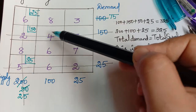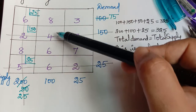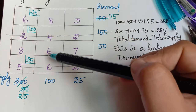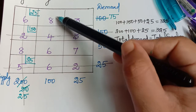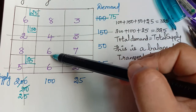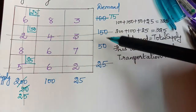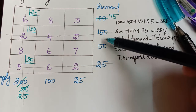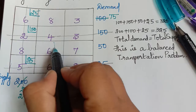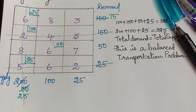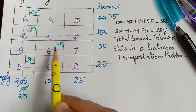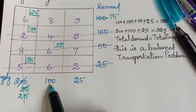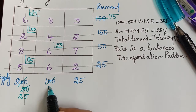In the second column, two cells have already been struck off, leaving two cells with values 8 and 6. We choose the least value, which is 6, and make an allocation for this cell. The demand is 50 and the supply is 100, so the minimum is 50. We allocate 50 and strike off that row. Subtracting 50 from 100 leaves a remaining supply of 50.